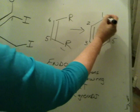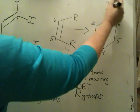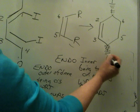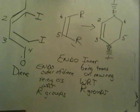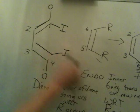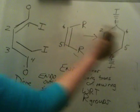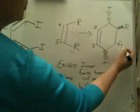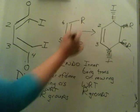I want the inner groups to be trans to these groups. So I'm going to go inner hash. It doesn't matter. You could start with them as wedges. It doesn't matter. I could make those two wedges. But if I'm really drawing the endo, then the inner groups will be trans with respect to these groups.